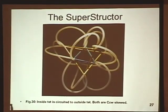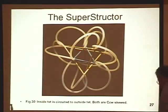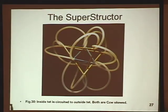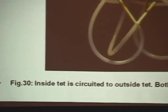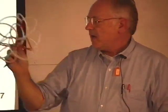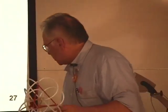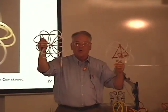Now we get into another realm — the superstructure. We started by making our little tetrahedron, or whatever polyhedron, in the center, and we built the same structure around it. Instead of plugging the inner one to itself, we plugged it to the outer one, so we get one form inside of another. We can also change the way it's circuited, and that will change the form we get.